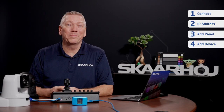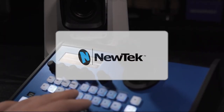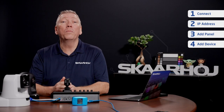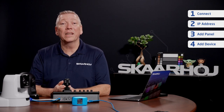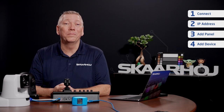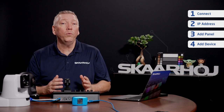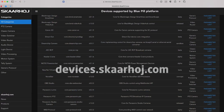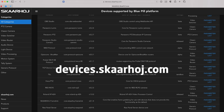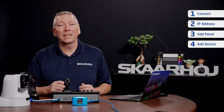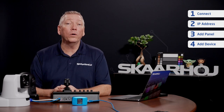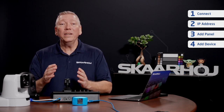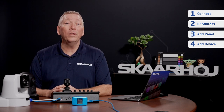Step 4: Add Devices. BluePill products can control a wide range of third-party devices such as cameras, video switchers, audio mixers and much more. They can even control multiple devices from different brands simultaneously. This is done using device cores, which are software plugins that have all commands for a particular device. We have made a lot of device cores — you can see a list at devices.skahoy.com. When adding a new device, the device core is automatically downloaded from our server if you have internet access. If you are on a closed network without internet access, you can download device cores in advance to a computer and manually install them. This is covered in another video.